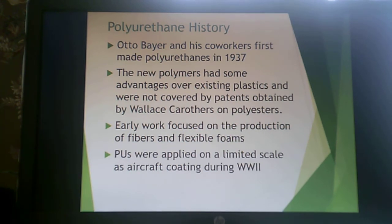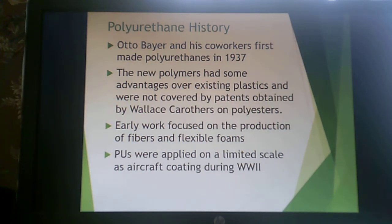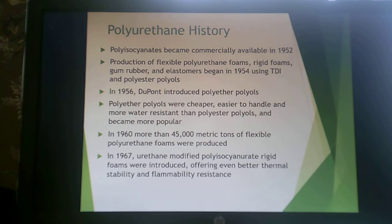The ever-present history portion. Polyurethanes were first developed by Otto Beyer and his co-workers around 1937, and they had some advantages over existing plastics not covered by Wallace Carothers' patents. Carothers did a lot with polyesters, and Beyer was trying to come up with something with similar properties that wasn't already protected. He focused early on the production of fibers and flexible foams. Polyurethanes were applied on a very limited scale as an aircraft coating during World War II.